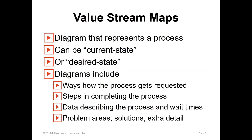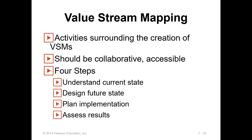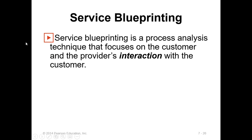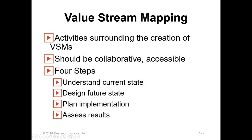The other tool is the value stream map, a diagram that represents the process in either current state or desired state. The diagram may include where and how the process gets requested, steps to complete the process, weights, time, and solution areas. A detailed example is provided in the book. You need to identify activities and have collaborative access steps. If you have any questions regarding value stream mapping, we can discuss on the discussion platform.